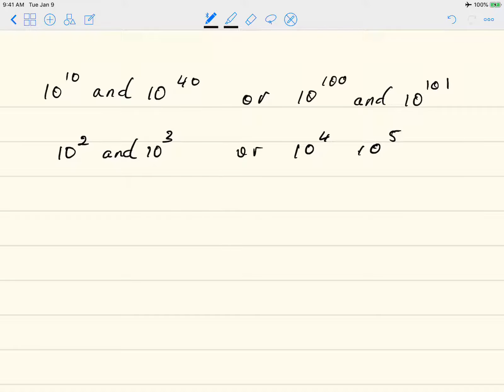So we know that 10 to the 2nd is 100, and we know that 10 cubed is 1,000. So 1,000 minus 100 would give us 900.